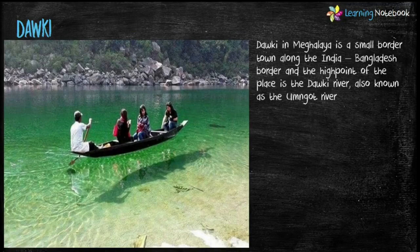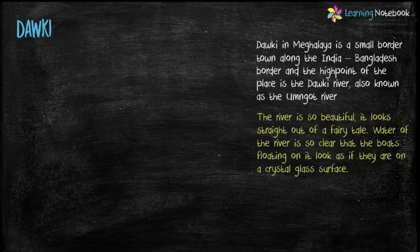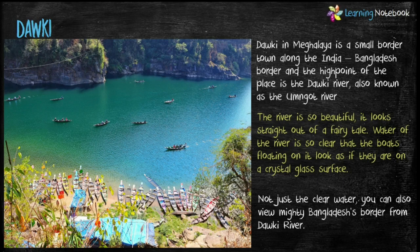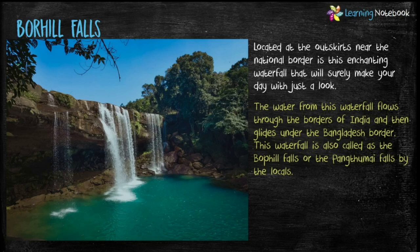Now let's see the next place, which is Dawki. Dawki is a small border town along the India-Bangladesh border. The main highlight of this place is the Dawki River. The water of the river is so clear that the boats floating on it look as if they are on a crystal glass surface. Located near the national border is an enchanting waterfall known as Bophill Falls.